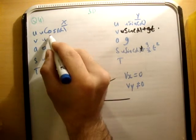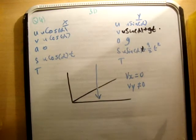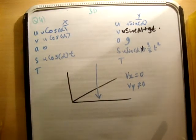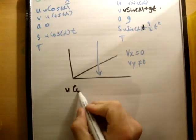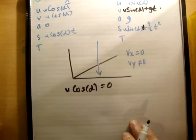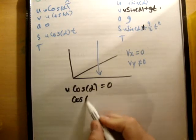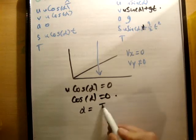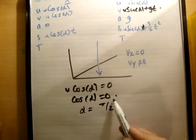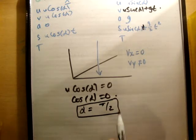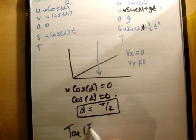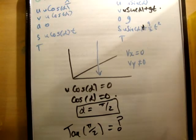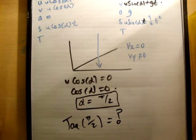However, if you look, v sub x is u cos alpha. So if that has to be 0, we're going to have u cos alpha is equal to 0. Now, u cannot be 0, so we're going to have cos alpha must be 0. And the only time cos is equal to 0 is at 90 degrees. So therefore, alpha will be equal to pi over 2. And the answer we're supposed to get, there is no tan of 90, or tan of pi over 2. There's no such thing. It makes no sense to ask what the tan of 90 degrees is. So that doesn't work.